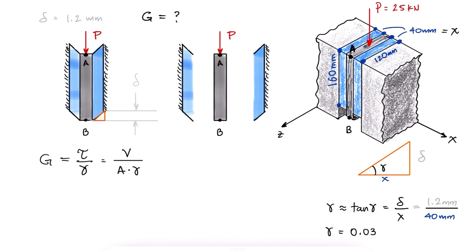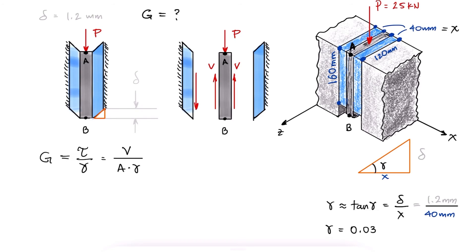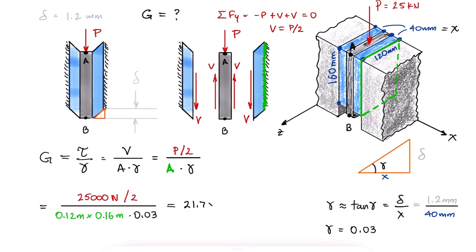The shear force V that affects each rubber block will be equal to P over 2. With the value of P, the shear strain we calculated, and the area parallel to that shear force, using the appropriate units, we find that the shear modulus is 21.7 MPa.